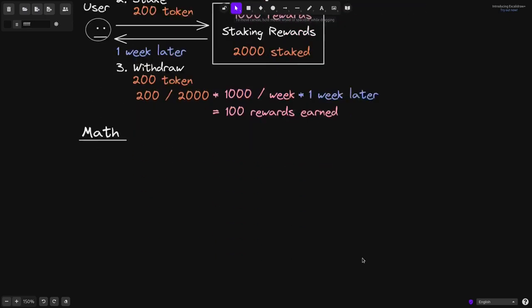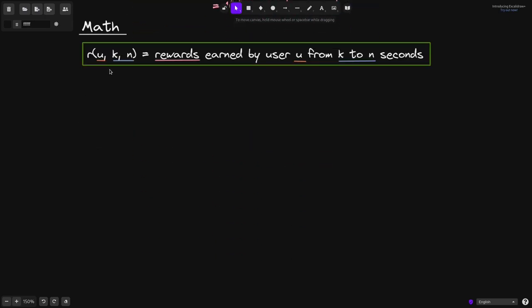Let's start with some definitions. I'll define a function named r that calculates the amount of rewards that was earned by a user. It takes in three inputs: u, k, and n, and it calculates the rewards earned by user u from time k to n, and both k and n are in seconds.